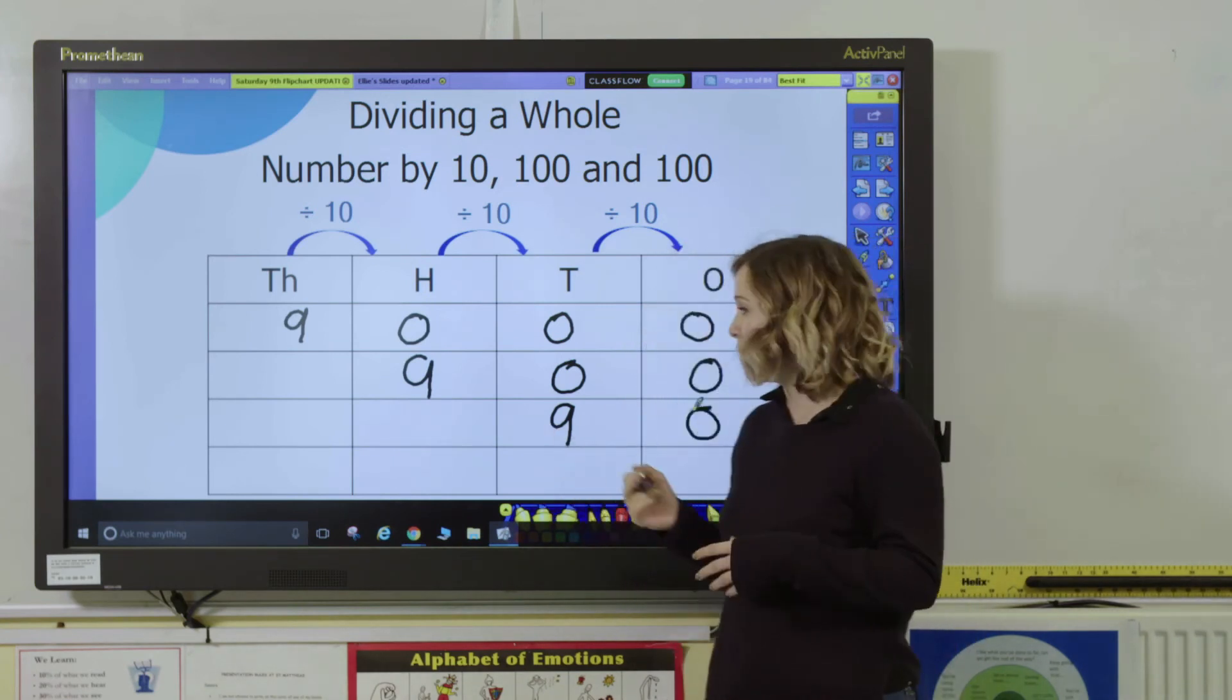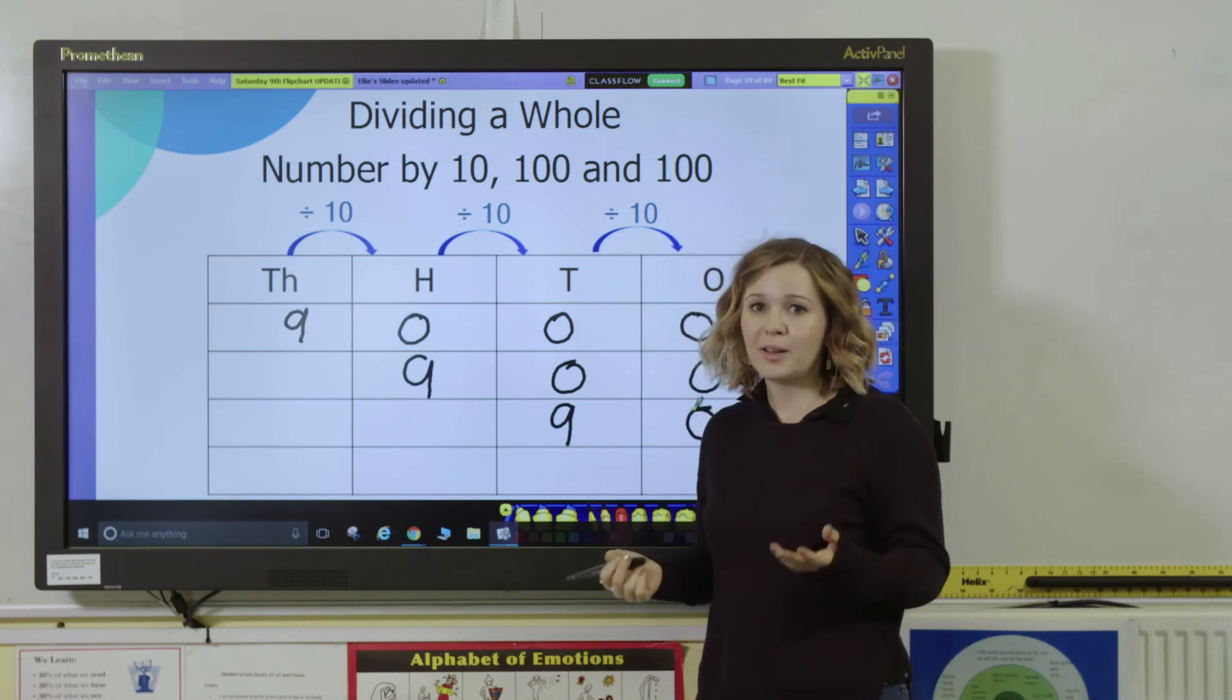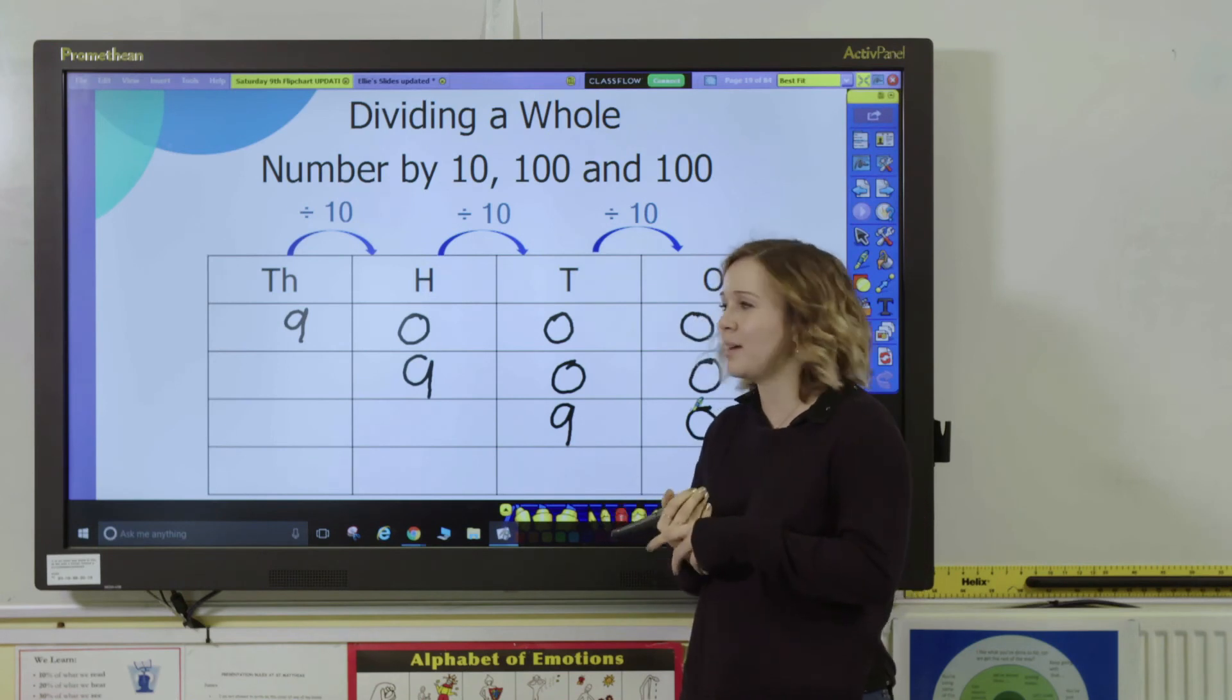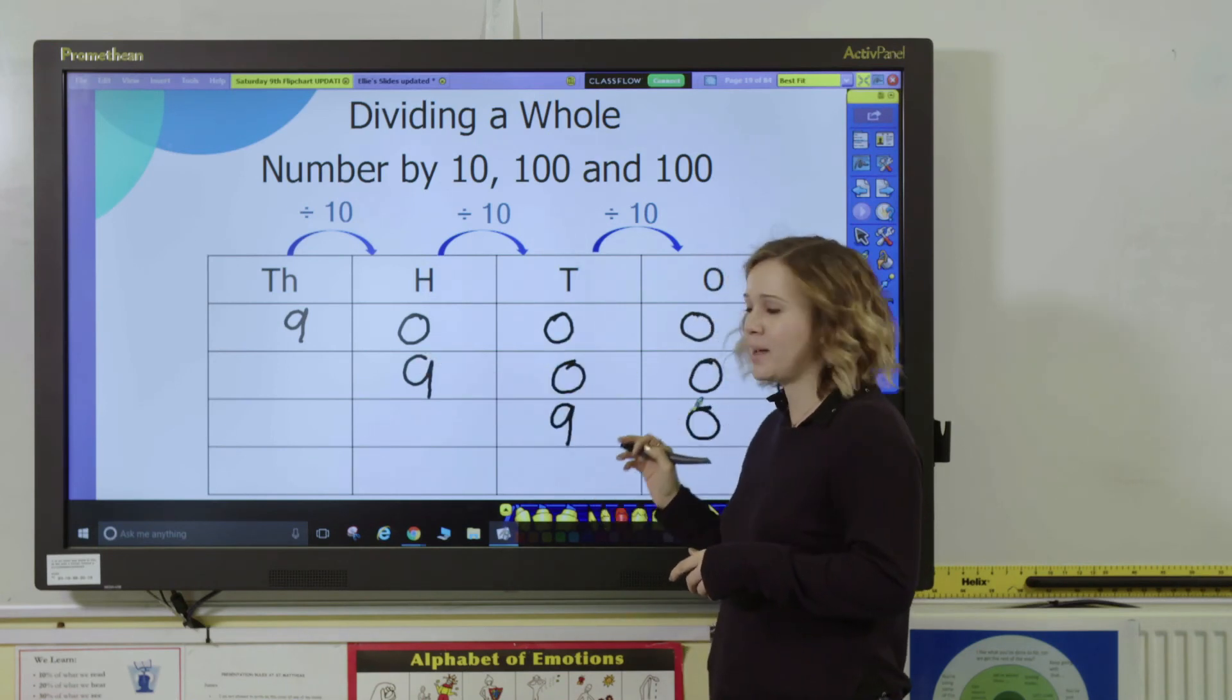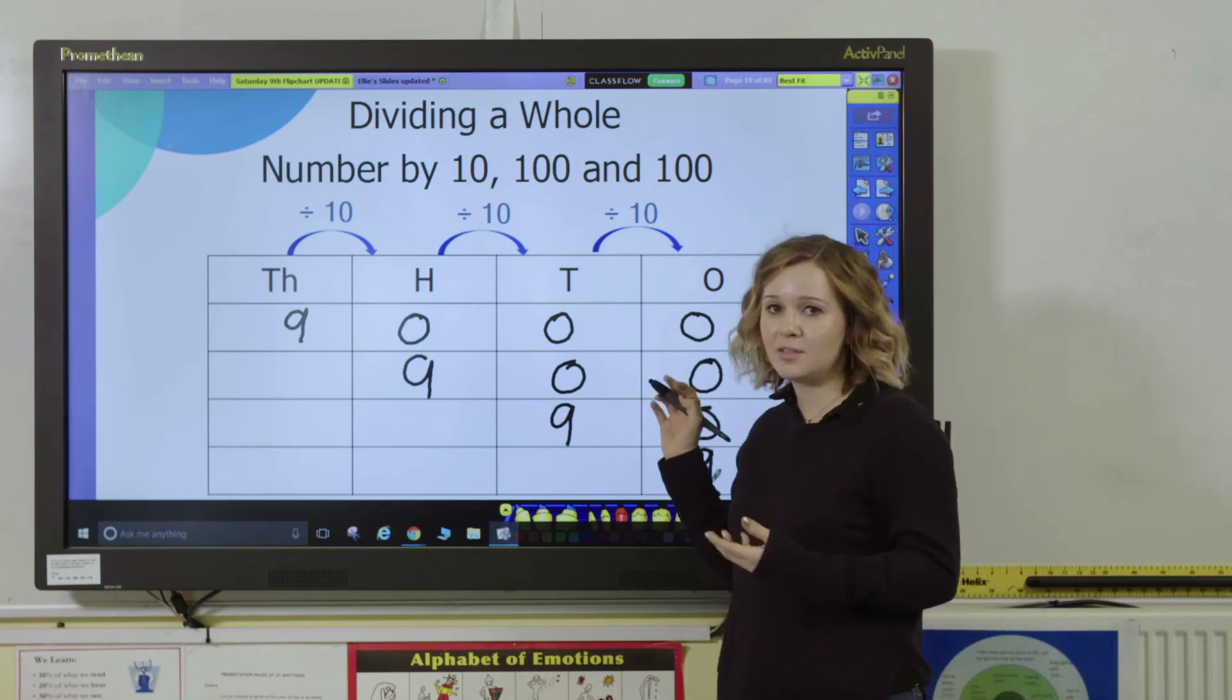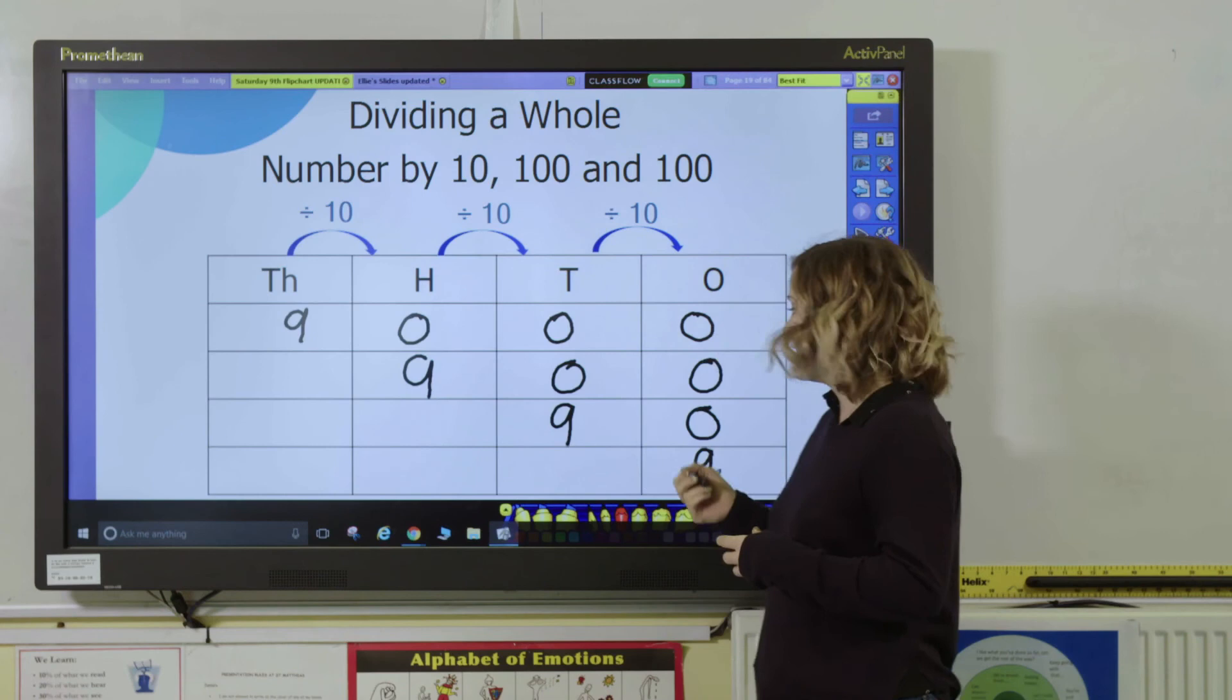And then the last step we're going to go to in this video is dividing by 1,000. So as you can see this pattern, hopefully pupils will start to understand what's happening. The digits are going to move three spaces to the right this time, so it's going to come down into our ones column. So 9,000 divided by 1,000 is 9.